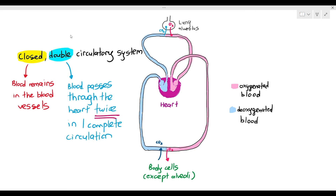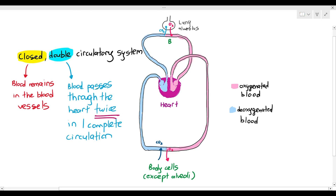To trace it: starting at the beginning, the blood goes to the heart once, out to the rest of the body, back to the heart a second time, and then ends — completing one full circulation. That is why it is called the double circulatory system.